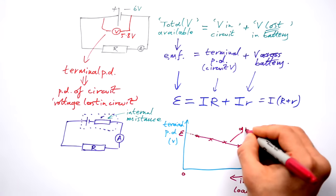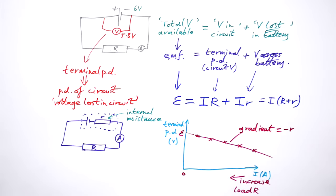Incidentally, the gradient of this gives you minus the internal resistance. So we can find out the internal resistance experimentally by measuring the terminal PD at different currents.